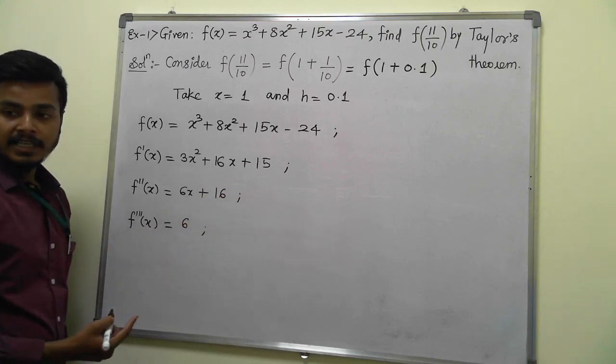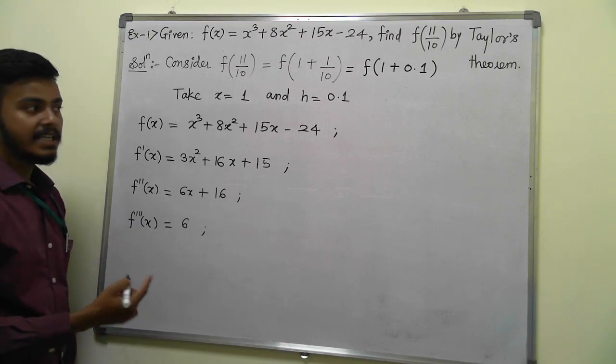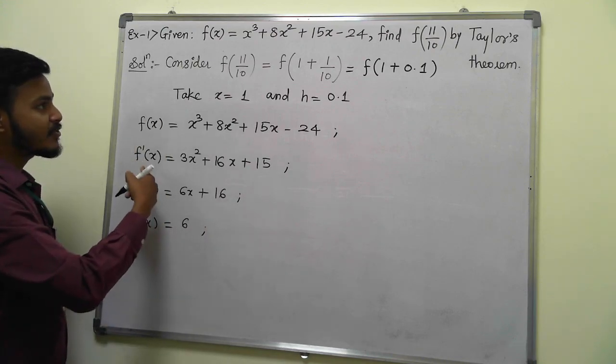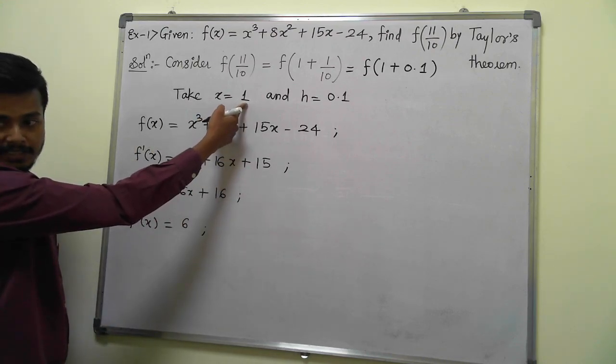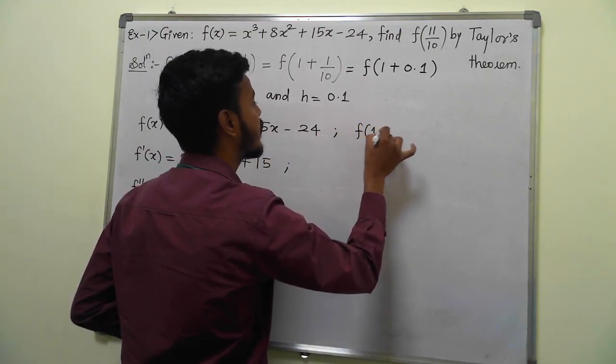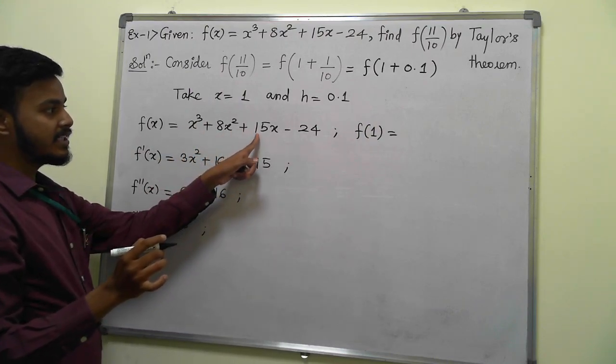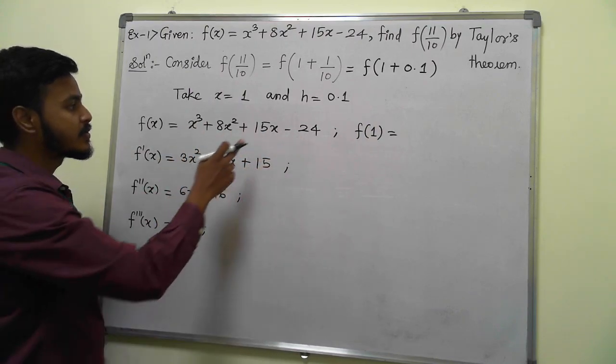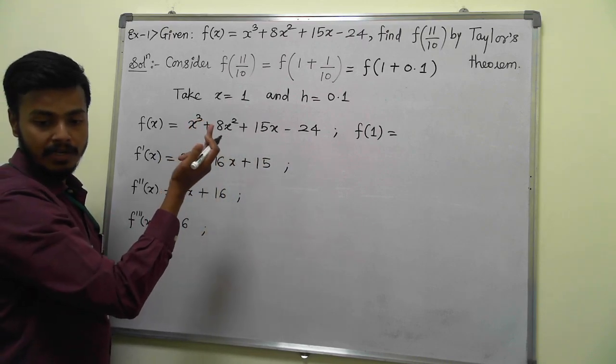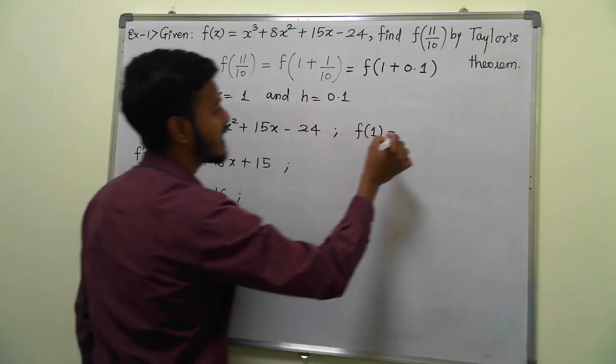We've seen the Taylor series expansion for f(x+h) in ascending powers of h. For this I need f(x), f'(x) at x = 1. Let's find all these. f(1) = 1 + 8 + 15 - 24. That's 15 + 8 = 24, minus 24 plus 1, which equals 0.